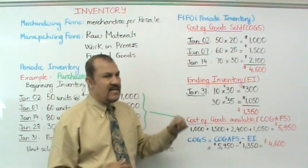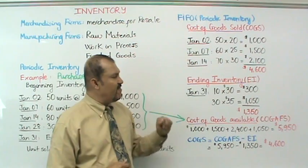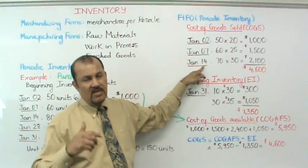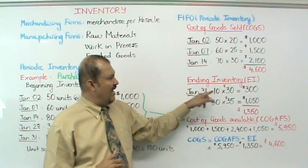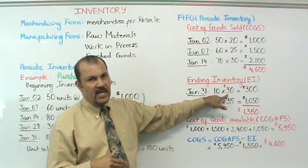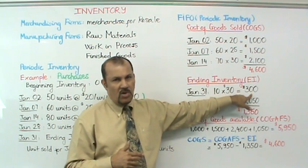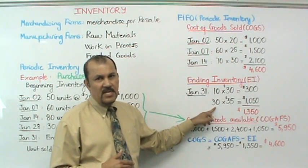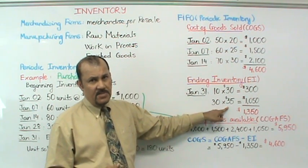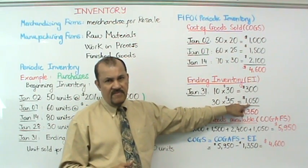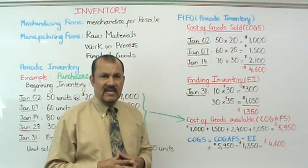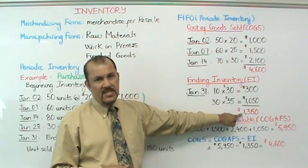Next we do the calculations for the ending inventory under FIFO. We had sold 70 of the 80 units from the January 14th purchase, which means we have 10 units remaining from that purchase. The cost of those 10 units was $30 per unit for a total cost of $300. And we have the entire 30 units remaining from the January 28th purchase at $35 per unit, for a total cost of $1,050. So the value of our ending inventory under the FIFO method is $1,350.